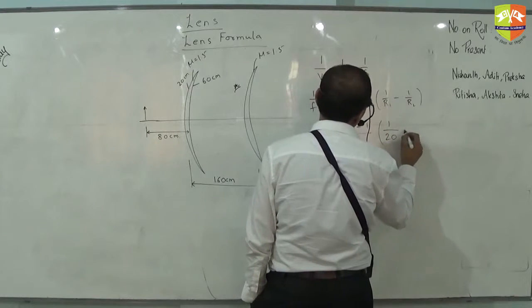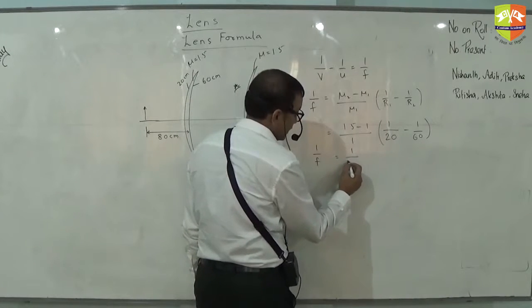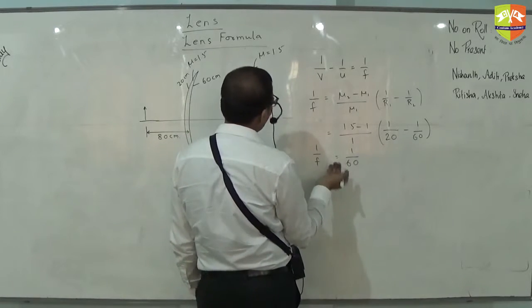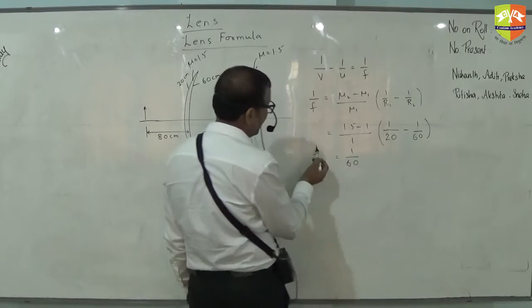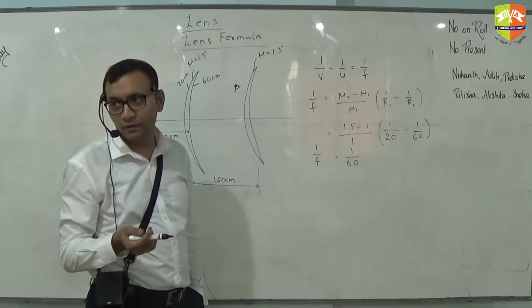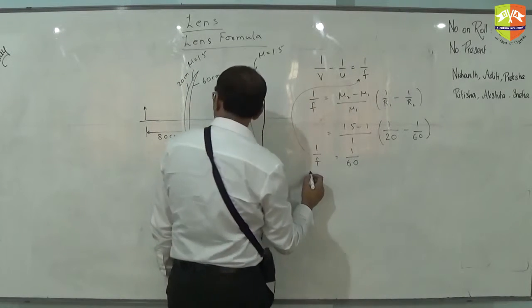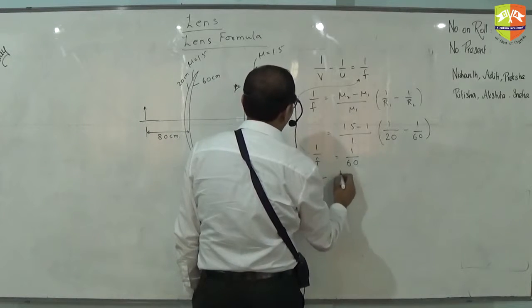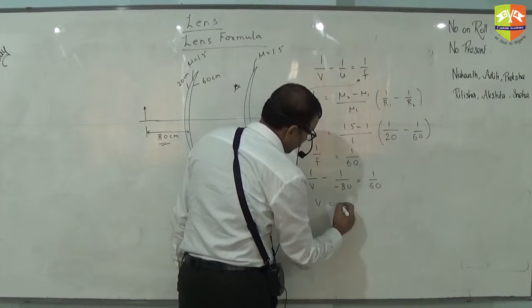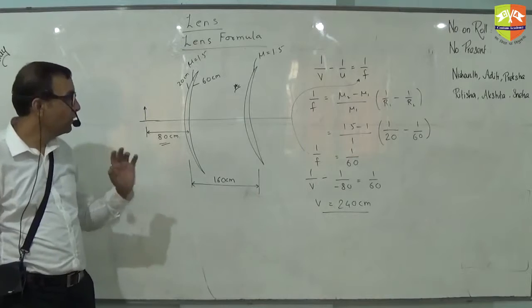1/20 minus 1/60. How much is this? 1/f is 1/60. So this nice number comes. Whether you substitute f or 1/r doesn't matter. But sometimes what will happen, you get 1/f, suppose you get 0.345. Do not invert it and then put here, you directly get 1/f here. So 1/v minus what is u? Minus 80. So this is minus 80 and this is 1/60. So v comes out to be 240 centimeter. This is what you do.